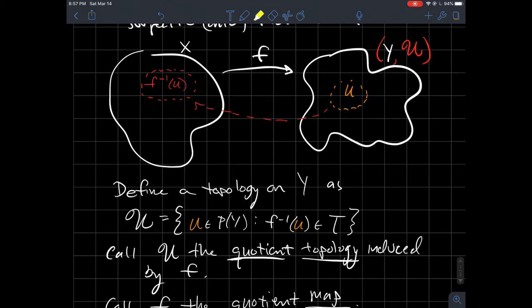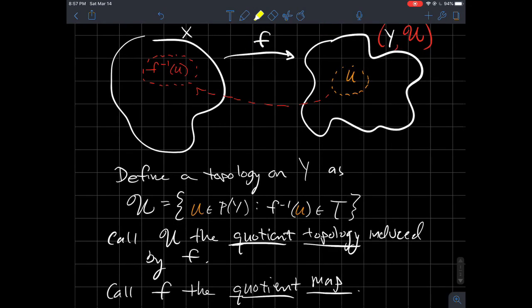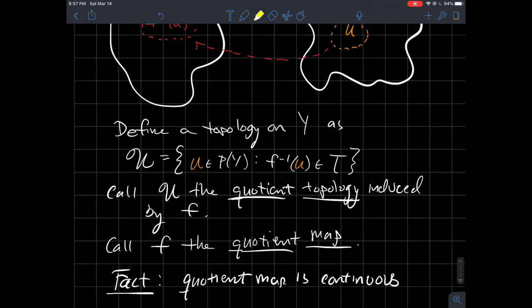In other words, it's probably trivial—it's kind of trivial that a quotient map should be continuous, just kind of by definition. This is open exactly when the preimage is open. So a quotient map is always going to be continuous. And what else can we say about that quotient topology?